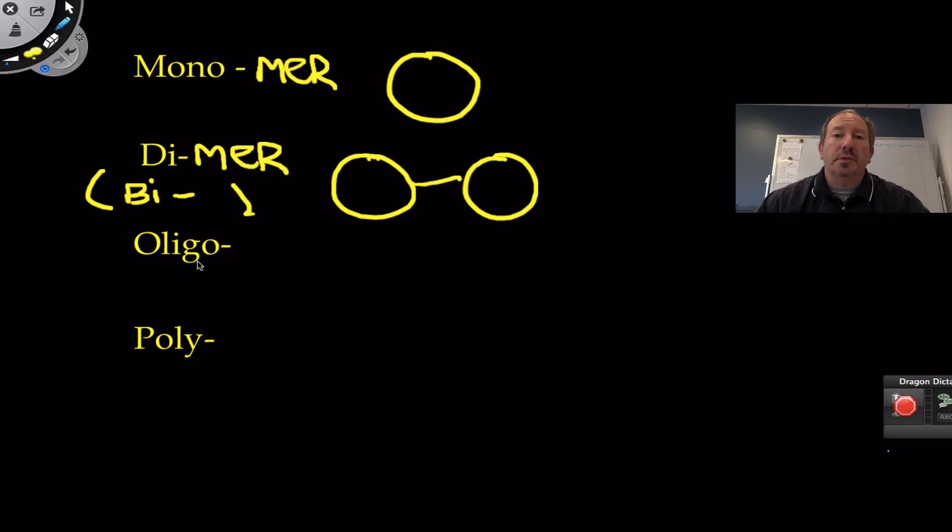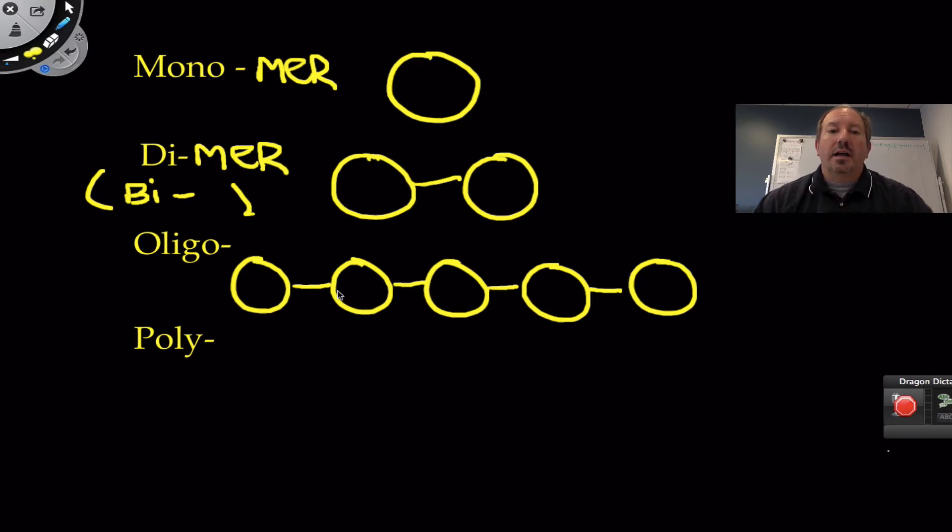Oligo is a prefix that means a few. If you had anywhere from three to four to five to 25 monomers, just a few monomers connected together forming an oligomer. These are fairly significant. You'll find oligosaccharides, which are small chains of sugars found on the outside of the plasma membrane of cells. You can also find oligonucleotides are very important in terms of DNA synthesis—they act as primers. In the cell, these oligonucleotides are RNA.